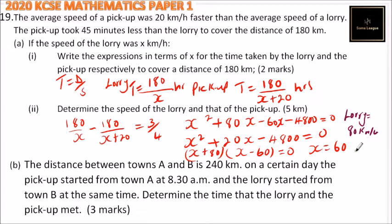And the pickup was 80 kilometers per hour because it was 20 kilometers per hour faster than that of the lorry. So that's how you work it out.